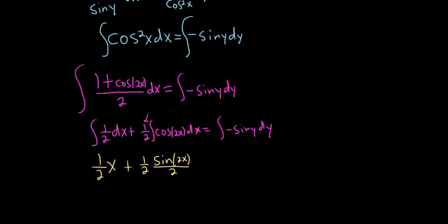You could make a u substitution. You could let u equal 2x and that's how you would get that. But in general, when you have a cosine or a sine and on the inside it's a number times x, just divide by the number.